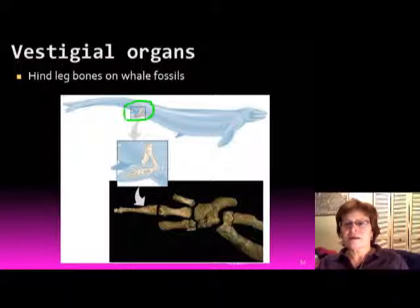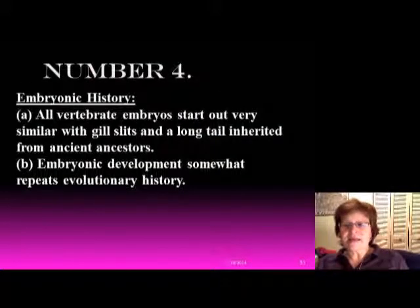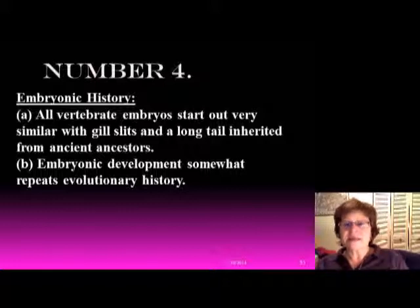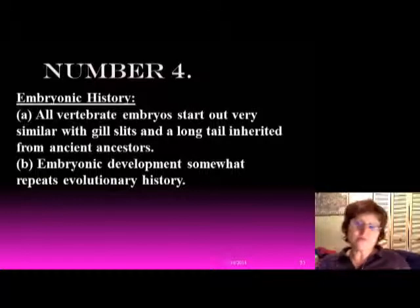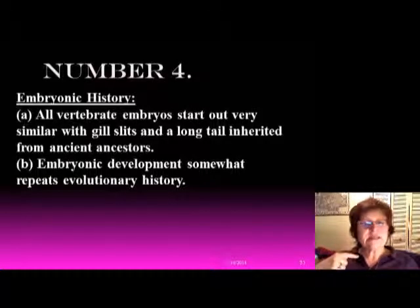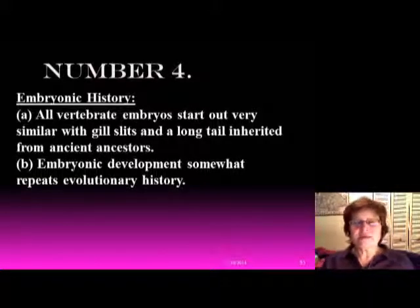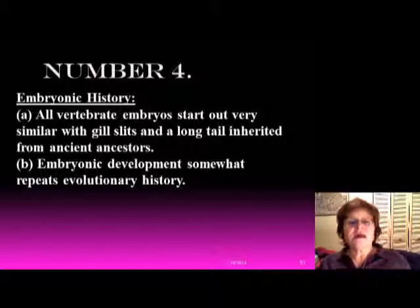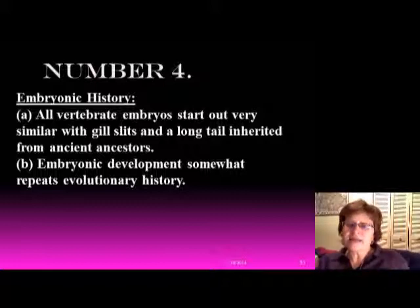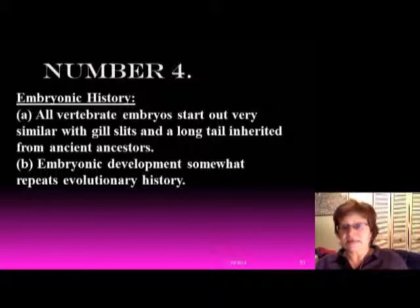Number four is embryonic history. All vertebrate embryos start out very, very similarly. Every single vertebrate embryo has gill slits and a long tail inherited from ancient ancestors. The statement came around that it seems like embryonic development repeats evolutionary history.